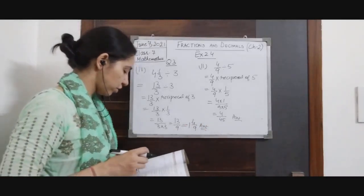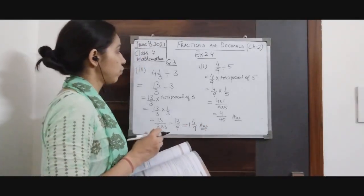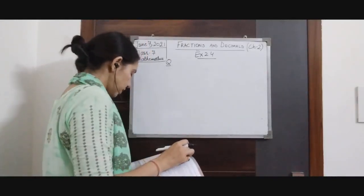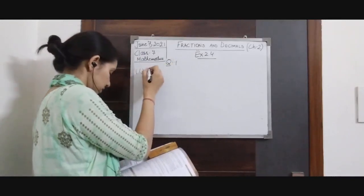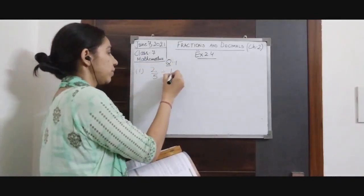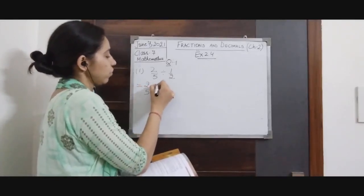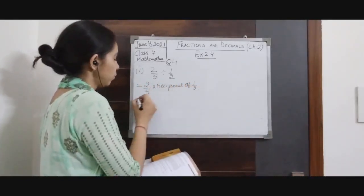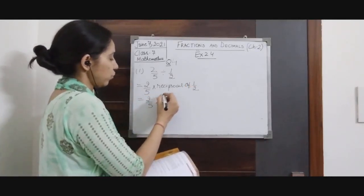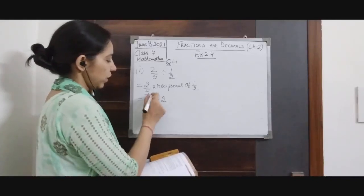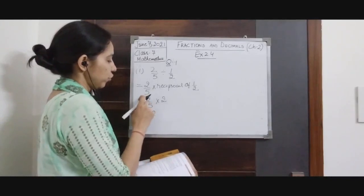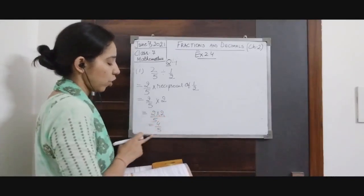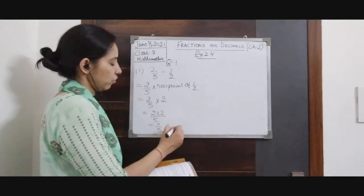We will move on to question number 4, which has division of two fractions. First part: 2/5 divided by 1/2. It is equivalent to 2/5 × reciprocal of 1/2, which equals 2 (since multiplying 2 and 1/2 gives 1). It is multiplication of a fraction with a whole number: multiply 2 with the numerator and leave the denominator, giving 4/5. It is a proper fraction so we leave it here. This will be our answer.